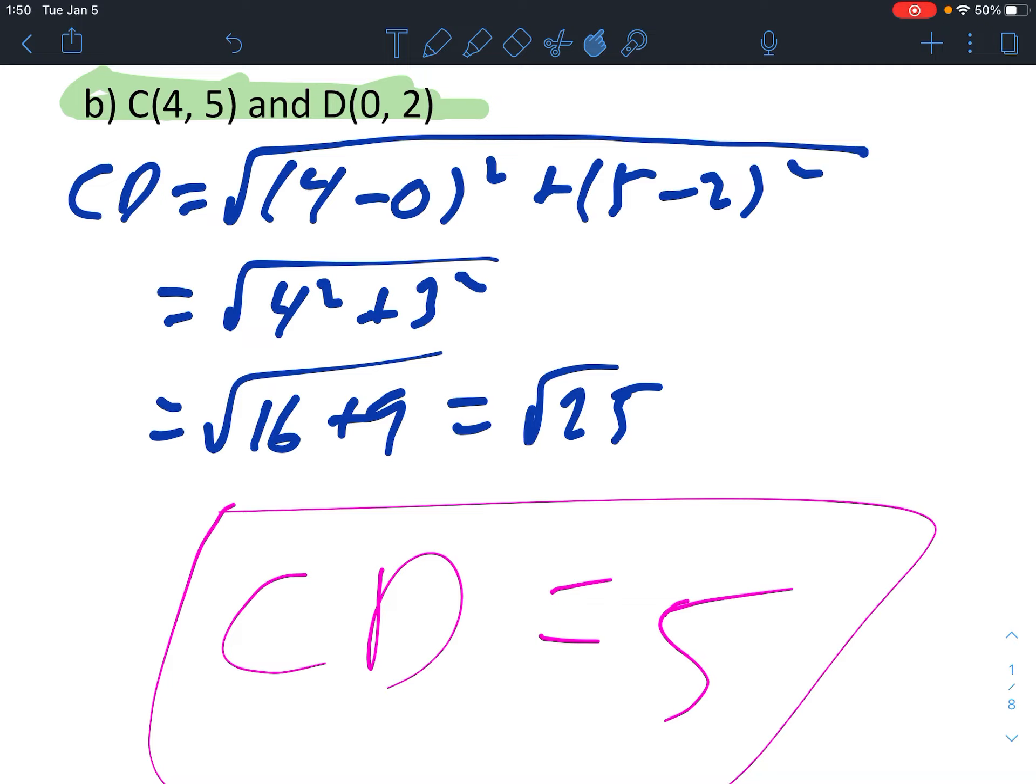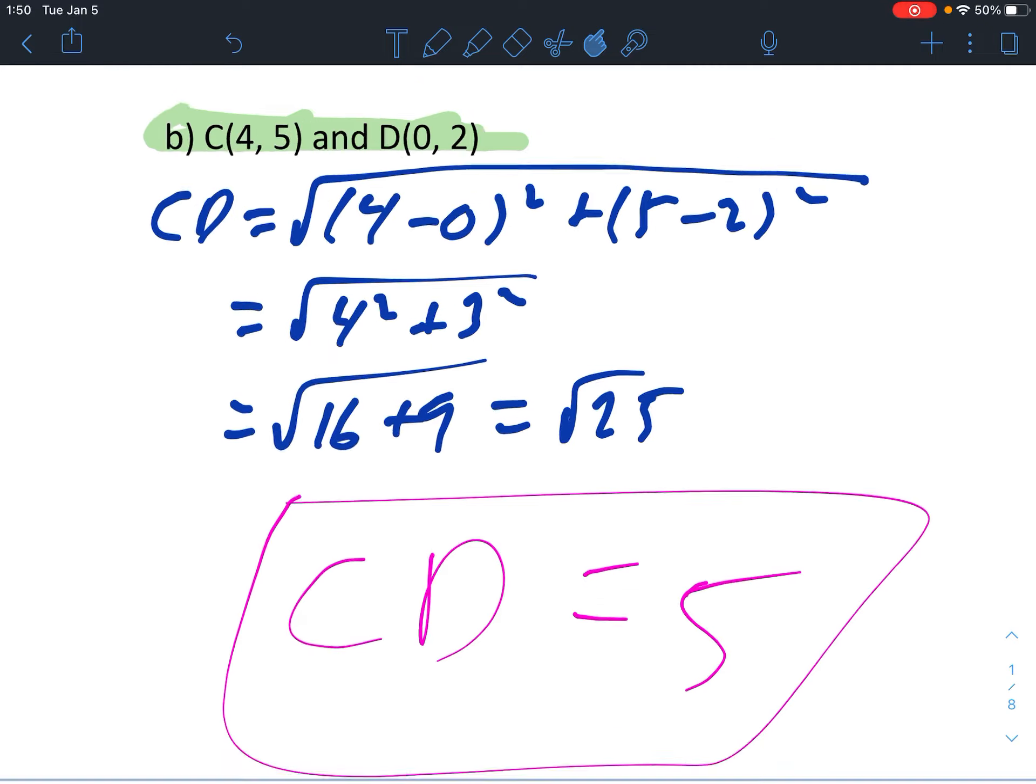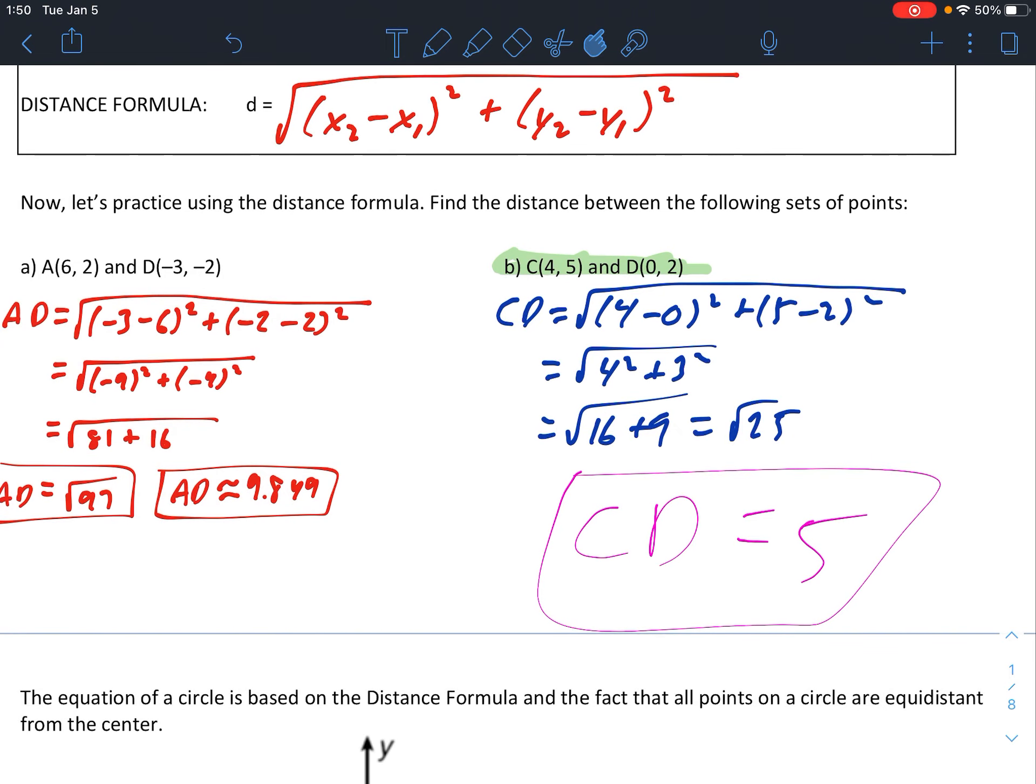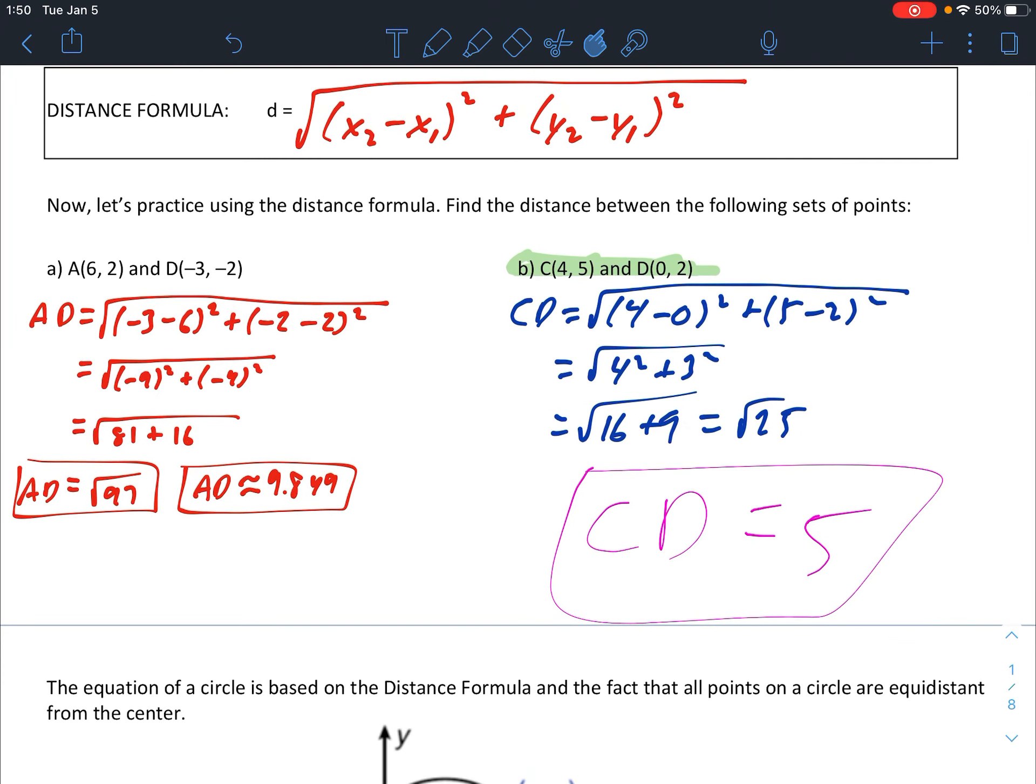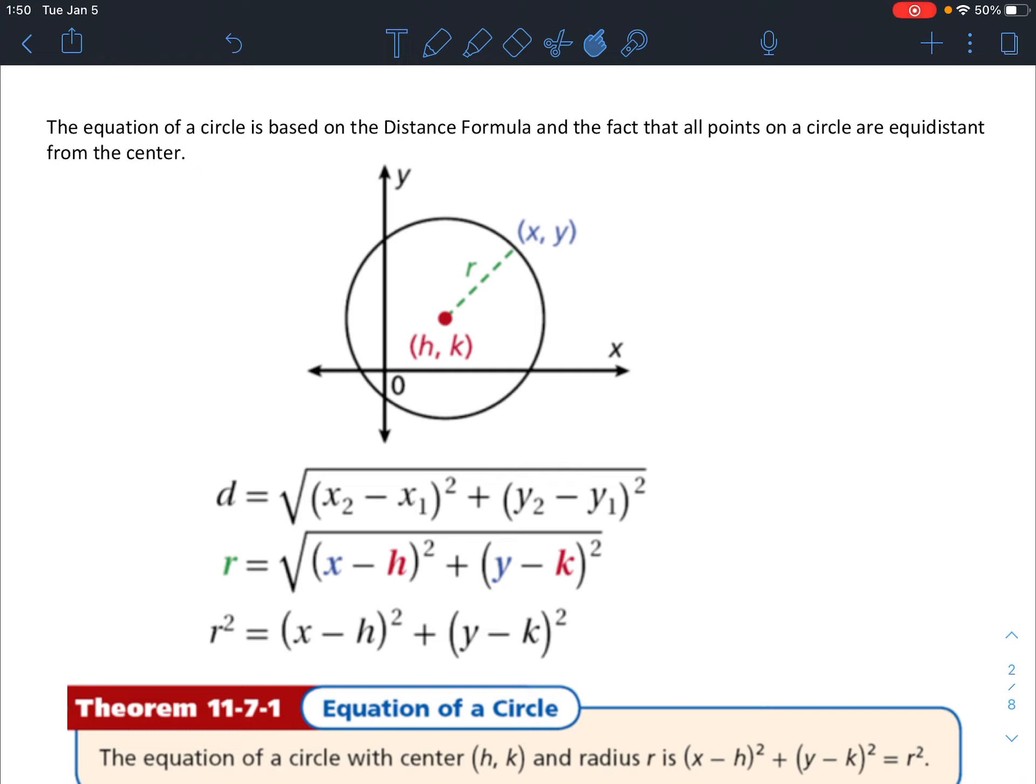A lot of the problems today, what we're going to do is I will do one with you and ask you to stop and try the second one on your own, kind of like we did here in the opener. But before we do that, let's learn the equation of the circle. The equation of the circle is based on the distance formula we just used, and the fact that all points on a circle are equidistant from the center.